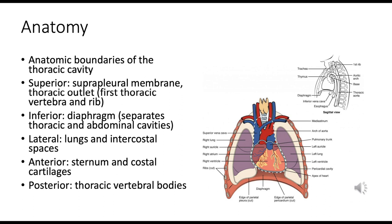The anterior boundary includes the sternum — the flat bone in the center of the chest where ribs connect through costal cartilages — and the costal cartilages themselves, which provide elasticity and flexibility to the ribcage, allowing expansion during respiration. The posterior boundary is formed by the thoracic vertebral bodies; there are typically 12 thoracic vertebrae, each articulating with a pair of ribs.